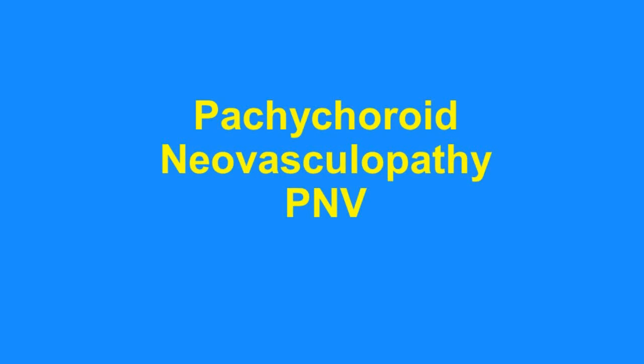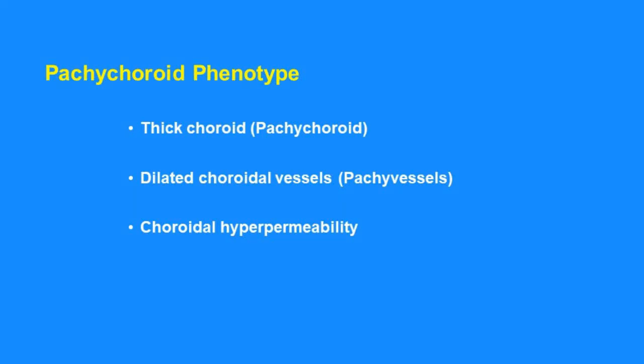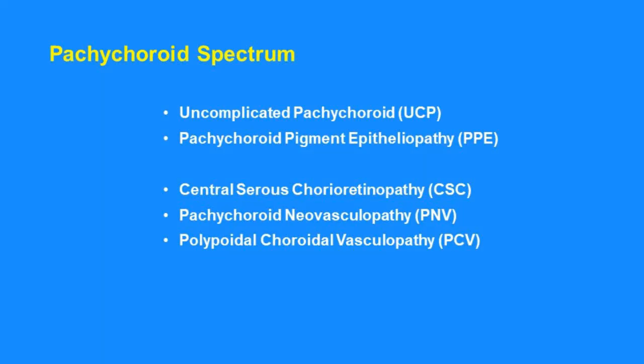Hello friends. In this video we'll be talking about a disease entity called pachychoroid neovasculopathy. The pachychoroid phenotype is characterized by thick choroid, dilated choroidal vessels (pachy vessels), and choroidal hyperpermeability on ICGA. The pachychoroid spectrum encompasses the following entities: uncomplicated pachychoroid, pachychoroid pigment epitheliopathy, central serous chorioretinopathy, pachychoroid neovasculopathy, and polypoidal choroidal vasculopathy.